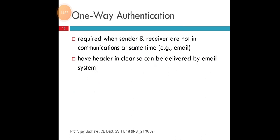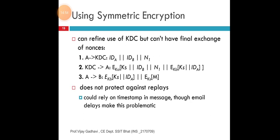One-way authentication is required when sender and receiver are not in communication at the same time — like email. The message header is in clear so it can be delivered by the email system. Using symmetric encryption, we refine the use of KDC but cannot have a final exchange of nonces. Here you see step numbers one, two, and three, same as the above slides. The figures and numbers do not protect against replies. This could delay on timestamp in email — delay makes this problematic.